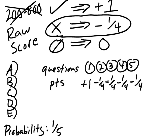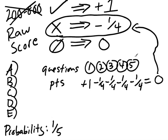You get plus one point, minus a quarter point, minus a quarter point, minus a quarter point, minus a quarter point. What does that add up to? If I give you a dollar and then I take away four quarters, you get nothing. This zero is the reason why they actually take off a quarter point — what the SAT wants to do is remove any benefit you might get from randomly guessing.